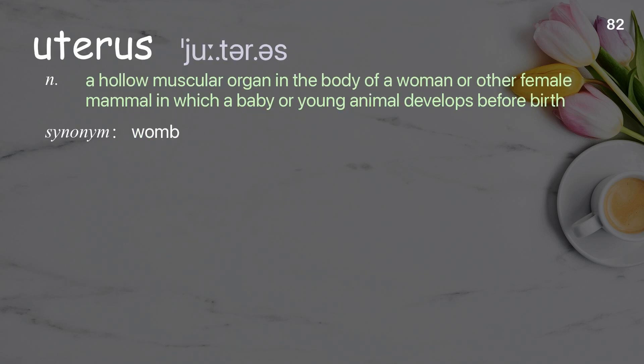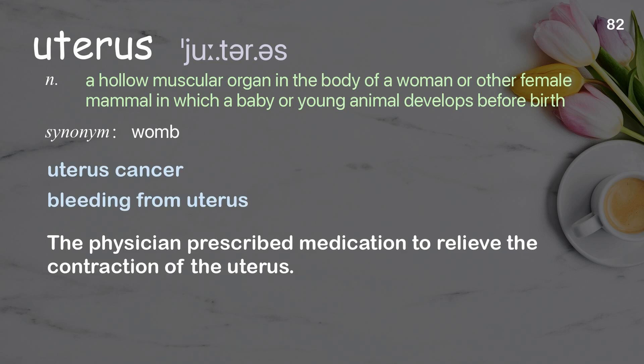Uterus: a hollow muscular organ in the body of a woman or other female mammal in which a baby or young animal develops before birth. Examples: uterus cancer, bleeding from uterus. The physician prescribed medication to relieve the contraction of the uterus.